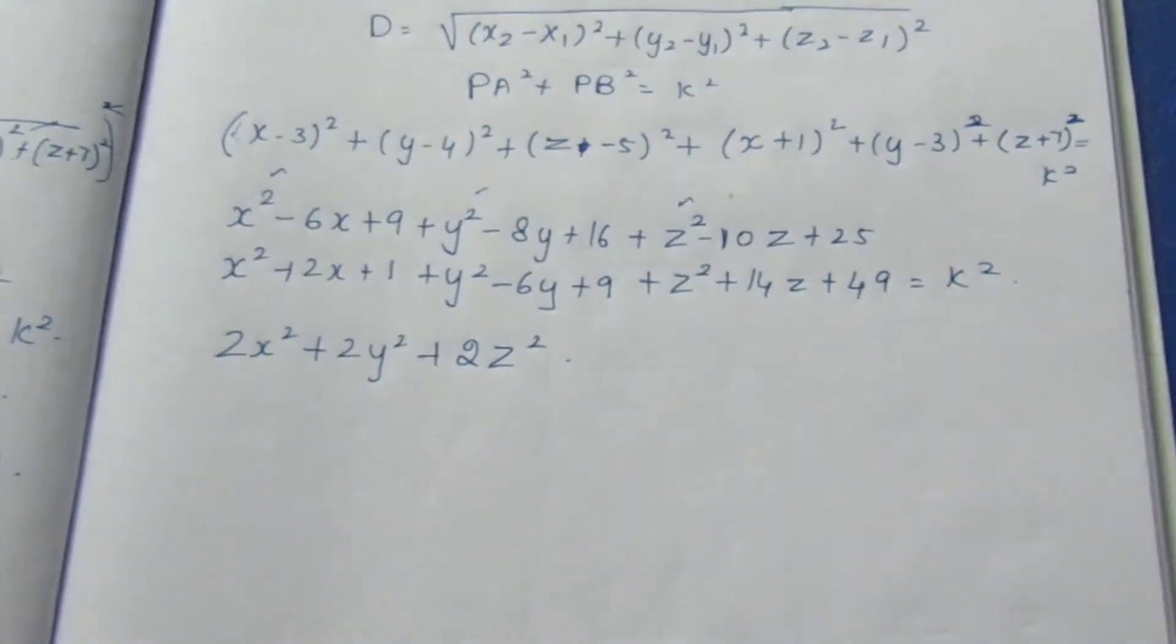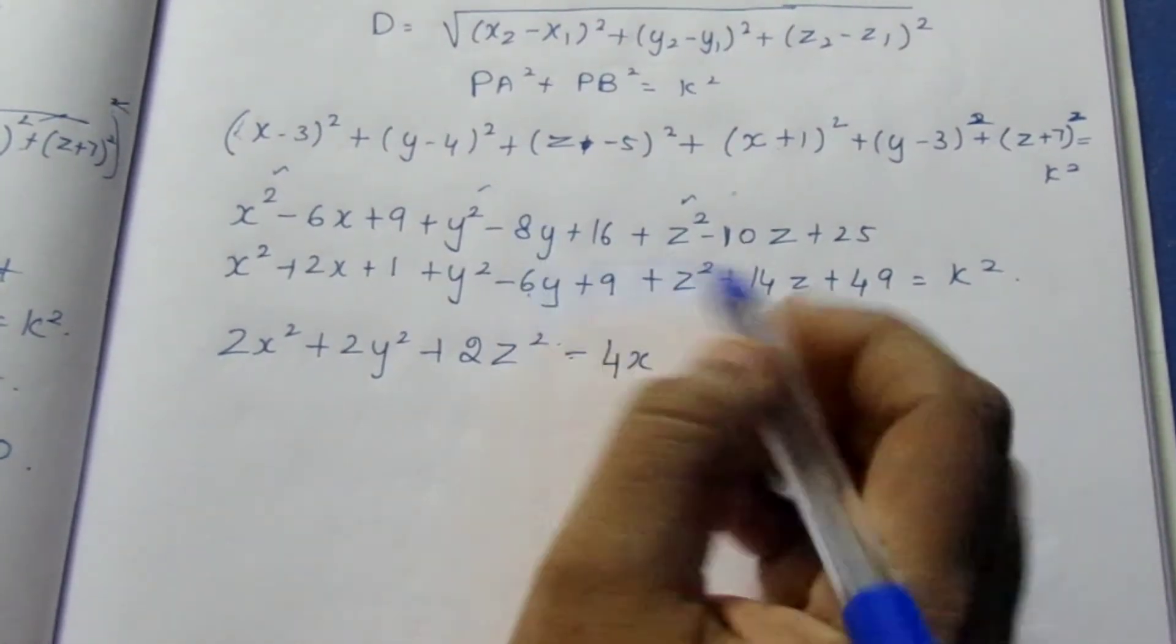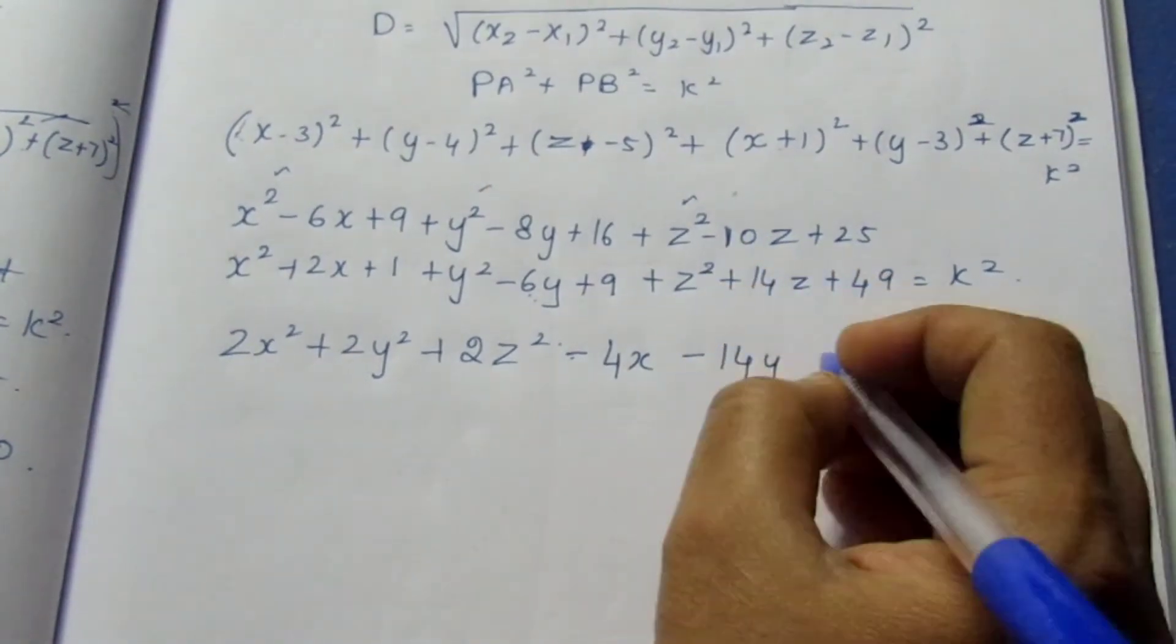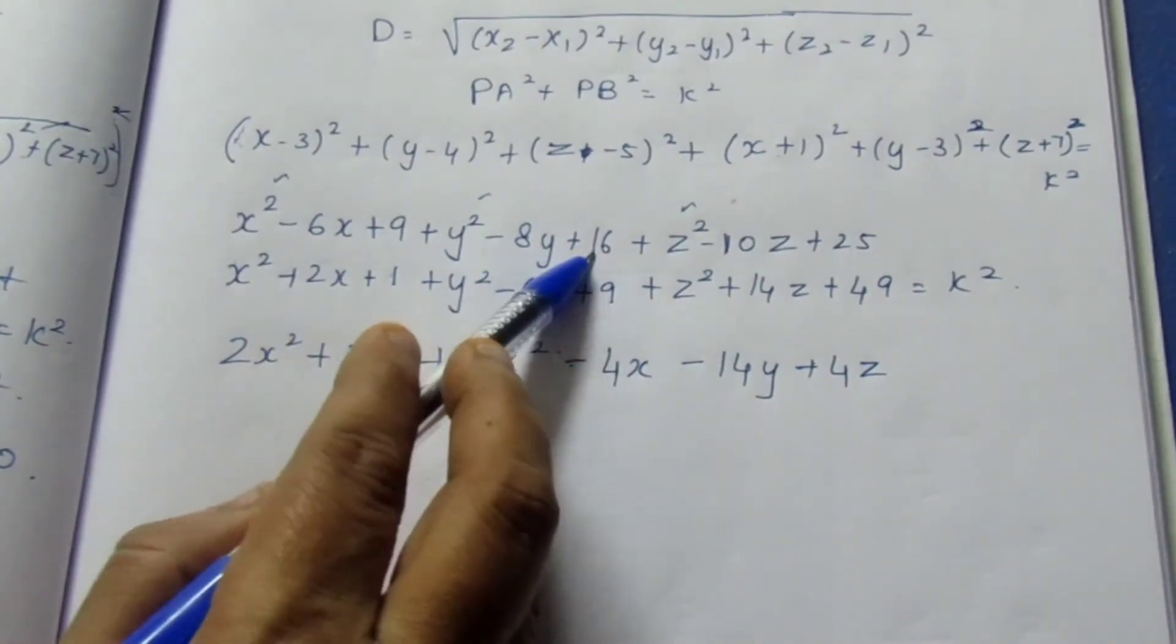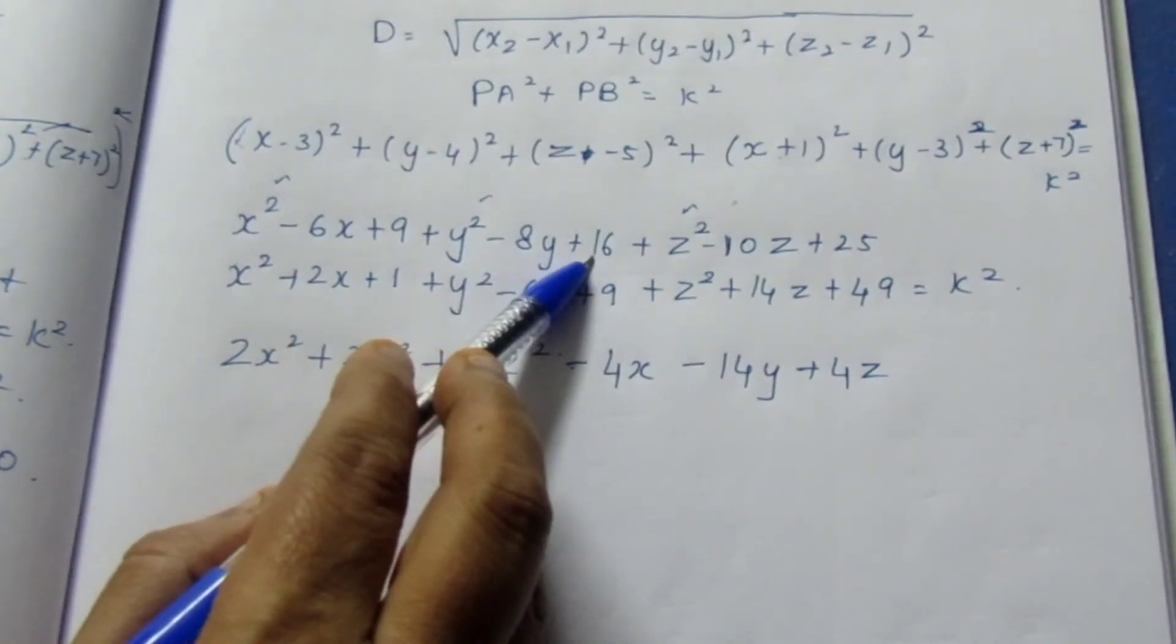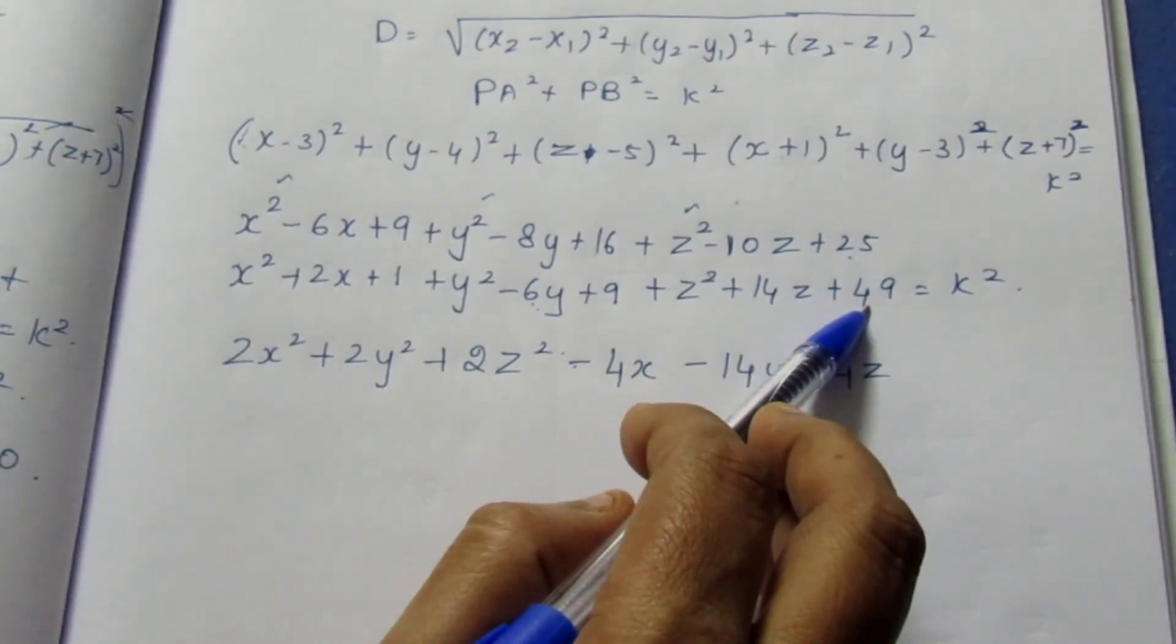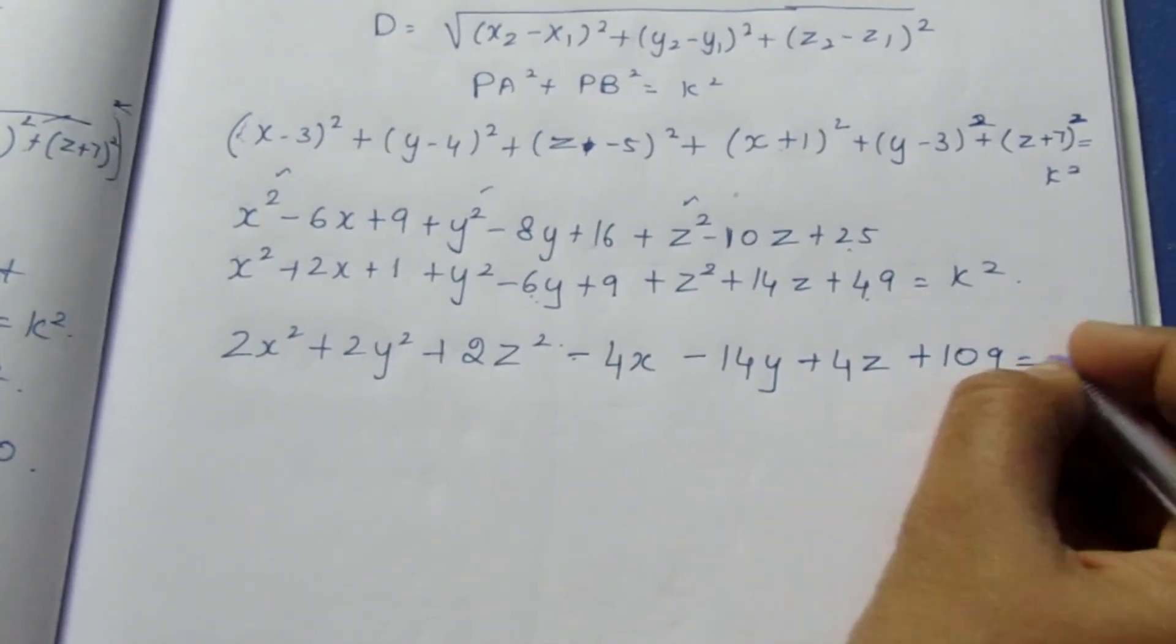The X term is minus 4X, the Y term is minus 14Y, the Z term is plus 4Z. Now 10 plus 16 is 26, plus 9 is 35, plus 25 is 60, plus 49 is 109, so 109 equal to K square.